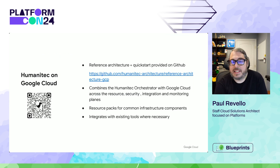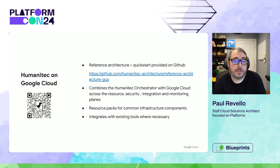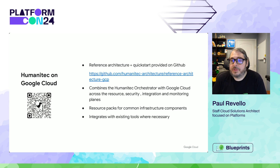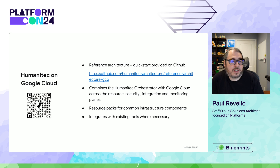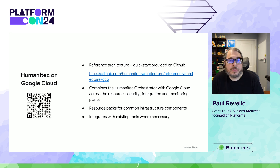So what is this thing? It's a set of curated infrastructure as code templates that provide a starting point to help you build an internal developer platform using the Humanitech Orchestrator and Google Cloud in conjunction with each other. All of this setup is available on GitHub and you can combine it with a free trial of the Humanitech Orchestrator to get started. I do want to remind everybody that tools are not the only part of platform engineering — you need to embrace platform as a product to truly be successful. But having said that, let's dive in and explore how tooling can really enable some particular use cases.